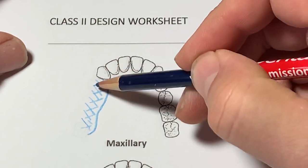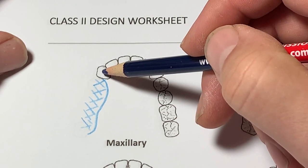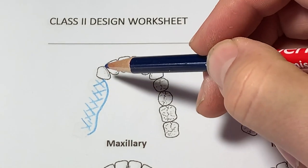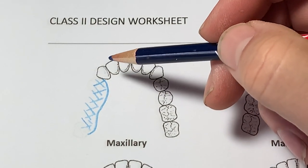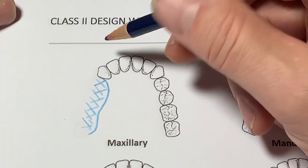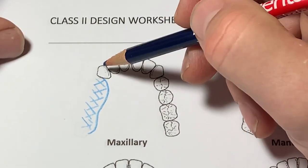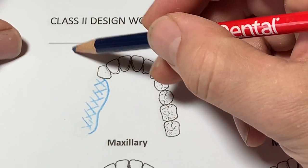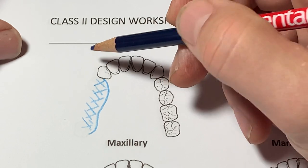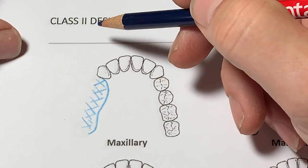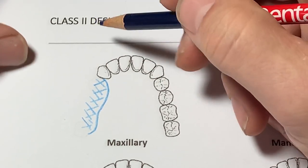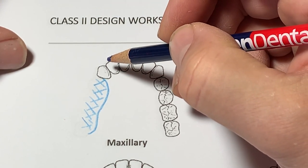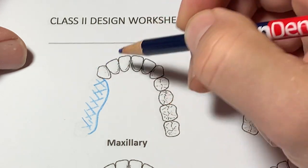The tooth adjacent to the edentulous area is usually, if not always, the abutment tooth or primary abutment. Here it would be the canine, tooth #13. We're going to clasp with a stress-breaking clasp — RPI, RPY, or G — whether that's stainless steel wire, tyconium wrought wire, or platinum gold palladium. Any of those would be acceptable for tooth #13.